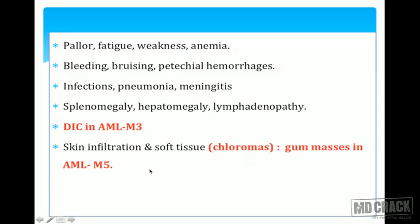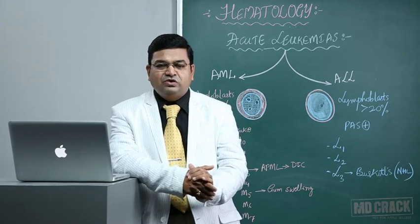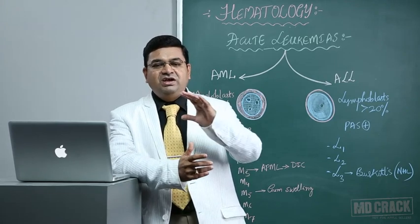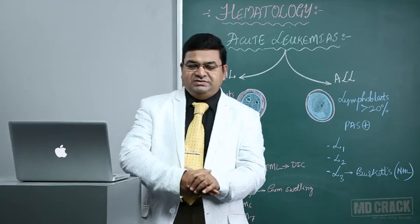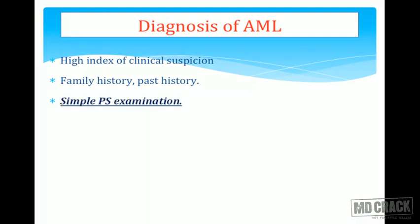Skin infiltration and soft tissue presentation are very common with M4 and M5 types, especially M5, which presents with gum masses. Soft tissue masses of acute myeloid leukemias are called chloromas — a soft tissue mass of acute leukemias, especially myeloid leukemias.